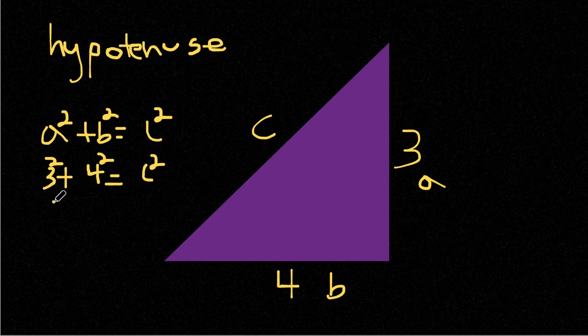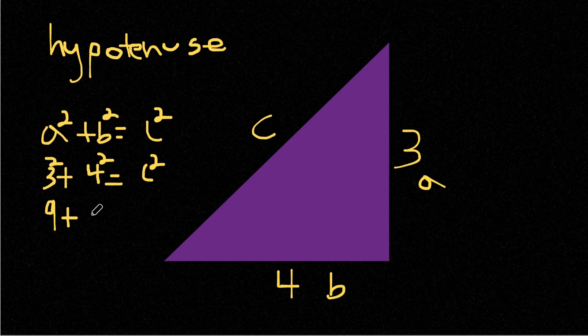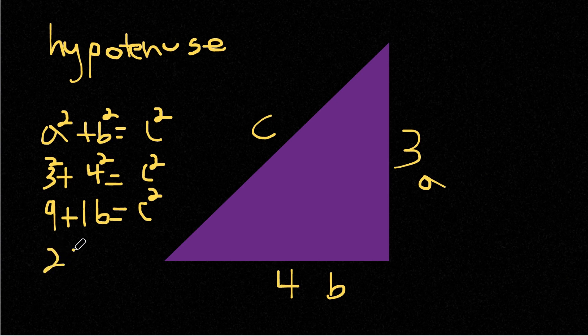Now 3 squared, that's 9, plus 4 squared is 16, and this is equal to c squared. Well, 9 plus 16 is 25, and that's equal to c squared.